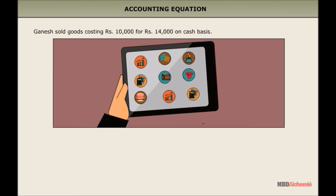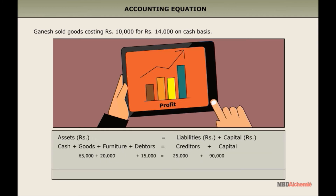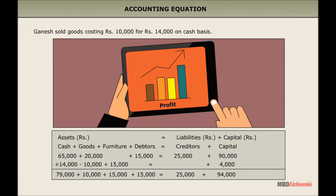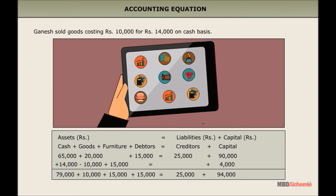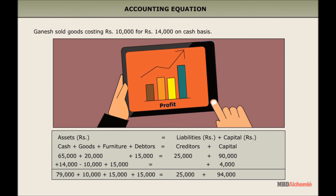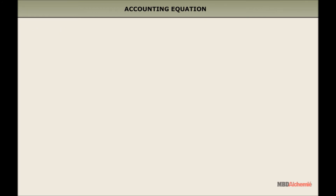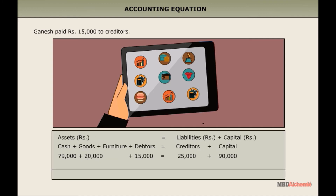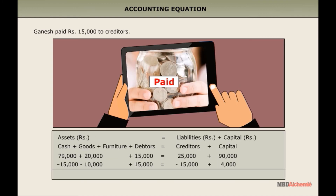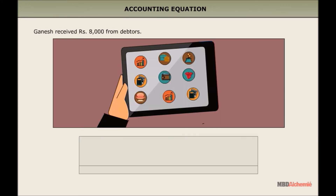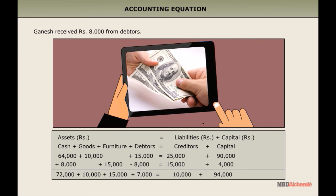Transaction 9: Ganesh sold goods costing 10,000 rupees for 14,000 rupees on a cash basis. There is a decrease in goods by 10,000 rupees and an increase in cash by 14,000 rupees, implying a profit of 4,000 rupees which will be added to capital. Transaction 10: Ganesh paid 15,000 rupees to creditors, decreasing both cash and creditors by the same amount. Transaction 11: Ganesh received 8,000 rupees from debtors, increasing cash and decreasing debtors by the same amount.